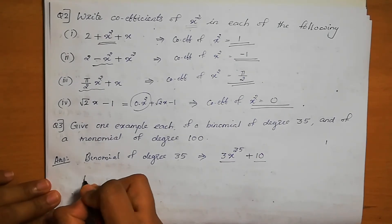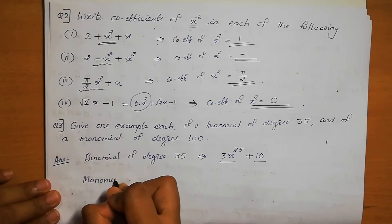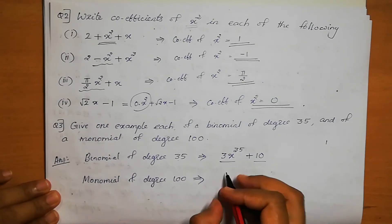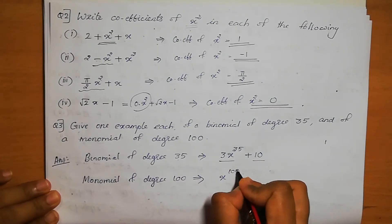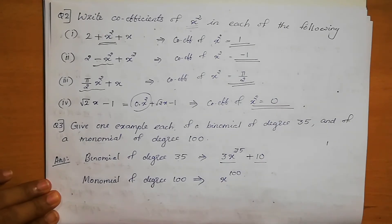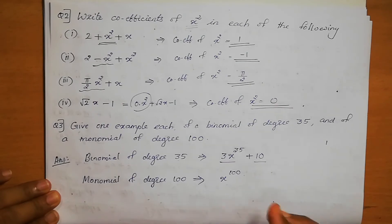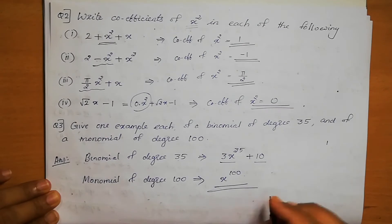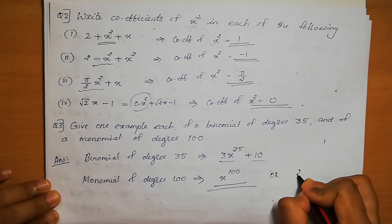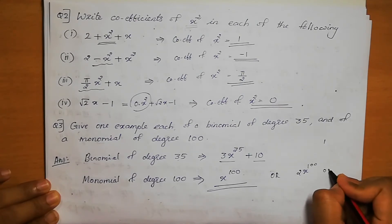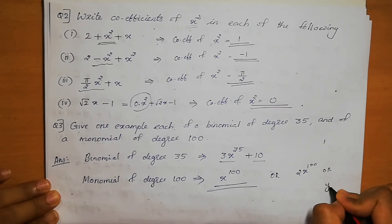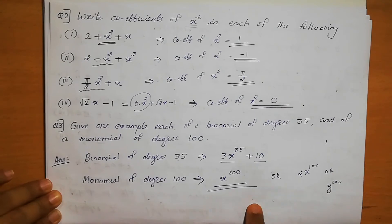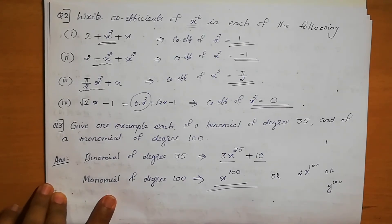Next, a monomial of degree 100. A monomial has only one term. So we can write x power 100. We could also write 2x power 100 or y power 100. Any expression with only one term and degree 100 works. This is the example for a monomial of degree 100.